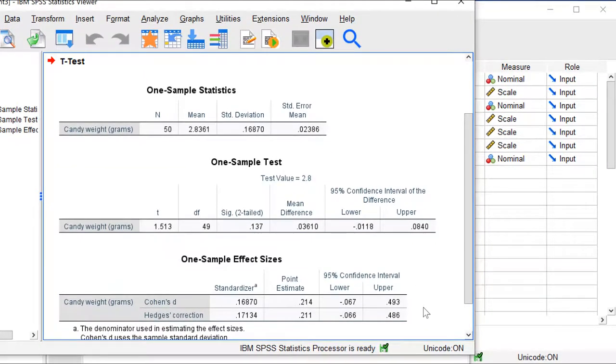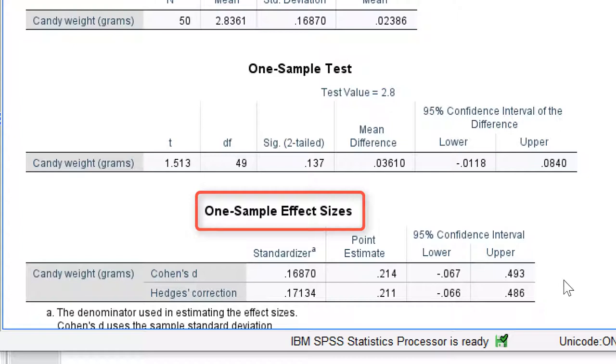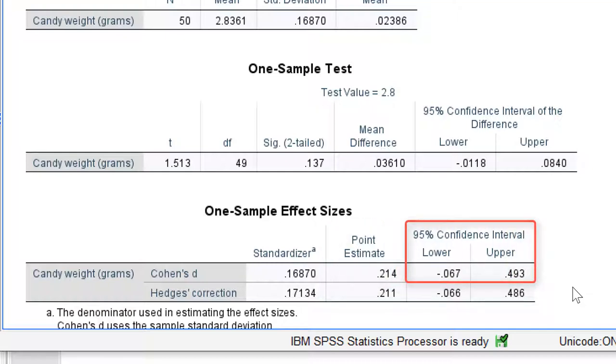In addition to the usual output for a t-test, there is a table with effect sizes. The point estimate for Cohen's d is 0.21, so we have a weak effect according to the rules of thumb. The table also provides us with the 95% confidence interval, which suggests that Cohen's d is between minus 0.07 and plus 0.49 in the population.